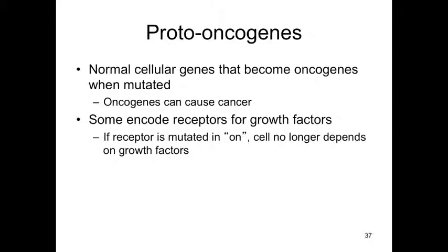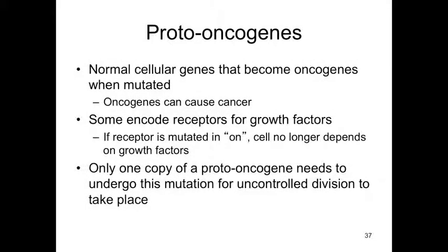Proto-oncogenes are normal cellular genes that become oncogenes — cancer-causing genes — when they have a mutation. So they are pre-cancerous genes. Oncogenes are the ones that actually cause cancer. Sometimes a receptor can be mutated in the 'on' position, so the switch is flipped on and the cell no longer depends on growth factors — it's just on and continually dividing, leading to uncontrolled cell division.